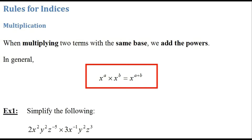Let's take this example. Example one: simplify the following. 2x to the power 2, y to the power 2, z to the power minus 5, multiplied by 3x to the power minus 1, y to the power 2, z to the power 3. Let's see how this example is done using the rule of multiplication.